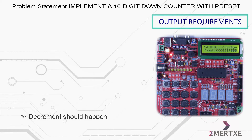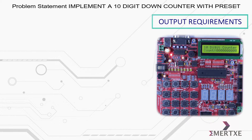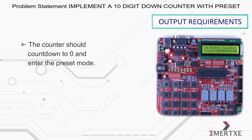The decrement should happen at a constant rate, and no key except start or preset should be sensitive in run mode. The counter should count down to zero and then enter the preset mode.